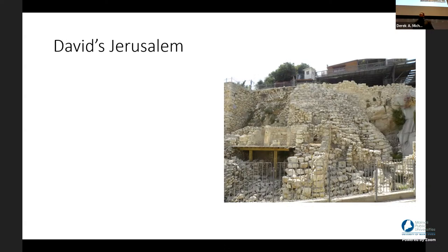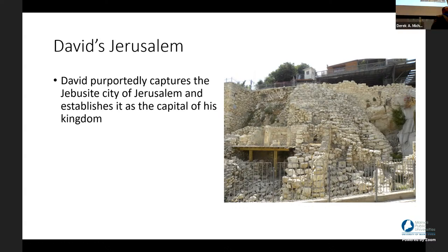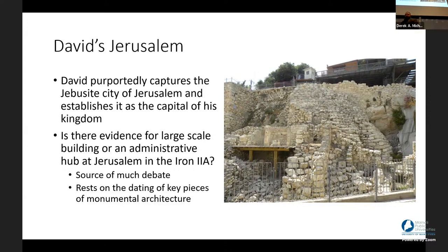Our third question is whether David founded a mighty capital in Jerusalem. How would we know? Purportedly, David captured a Jebusite city and established it as the capital. We'd expect public architecture — monumental architecture, big walls, palaces, eventually temples. Do we have evidence of a large administrative center from the Iron 2A? The answer is maybe. There's a structure called the Stepped Stone Structure in the City of David in Jerusalem, but its dating is difficult. Some say it's from the pre-Davidic Jebusite city; others say it's later.